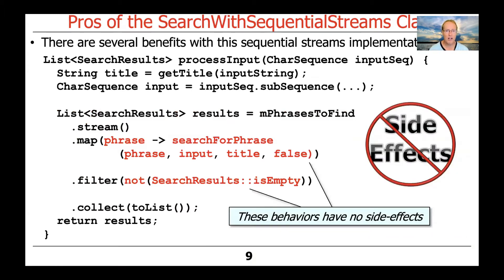Also very important to realize that the method references and lambda expressions we pass as behaviors into the various intermediate operations — like map, filter, and so on — are stateless and have no side effects. That's very important, and you'll see this when we look at the parallel streams version later. All we have to do is make one or two little tweaks to the factory methods that create the stream, and we go from sequential to parallel, which gives us a nice speedup in performance.